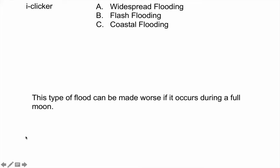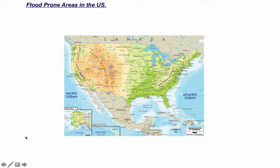This type of flood can be made worse if it occurs during a full moon. Coastal flooding is correct — when a hurricane makes landfall at high tide, which is a consequence of having a full moon, you get worse flooding because the ocean sea level is naturally higher due to gravitational forces. When you think about flooding, I want you to know that there is virtually no place you can go on Earth that is not susceptible to flooding.